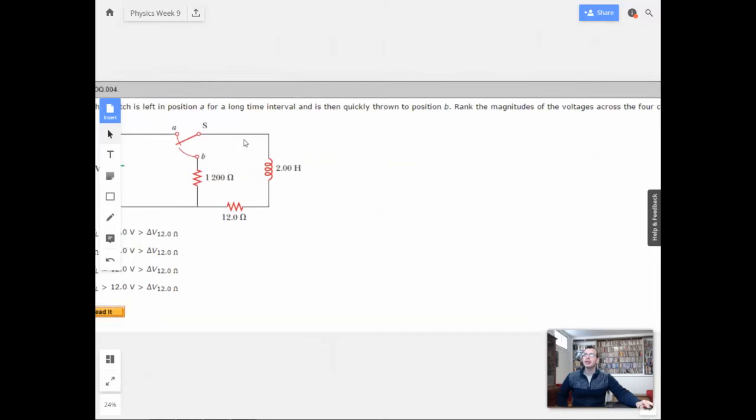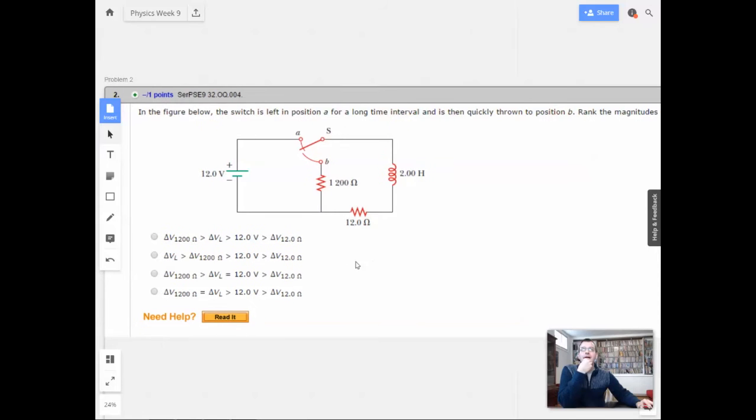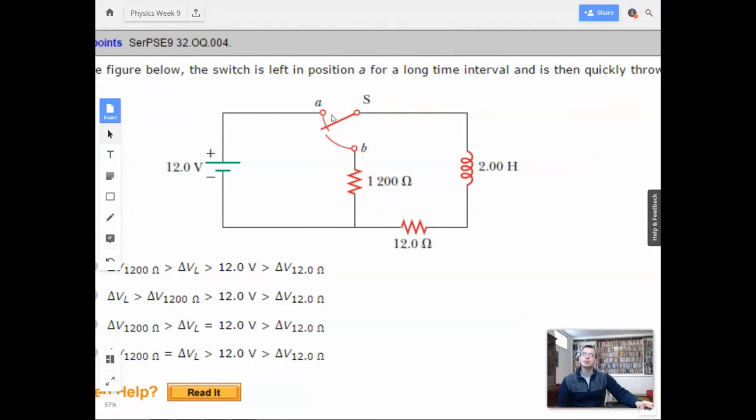Alright, largest to smallest, got it. So we start in position A for a long time, then goes to B. So when it's in A, we're going to have current going up this way, down through the inductor, through this guy, and then back here.